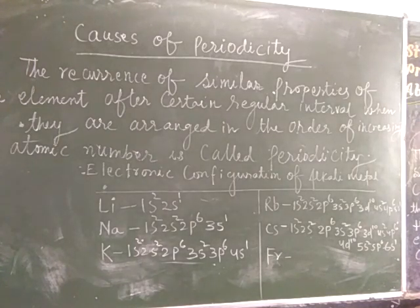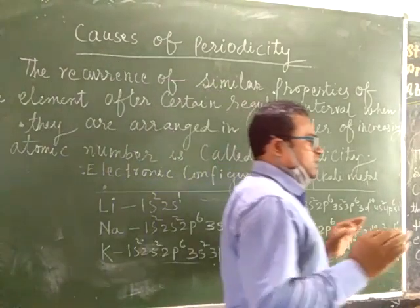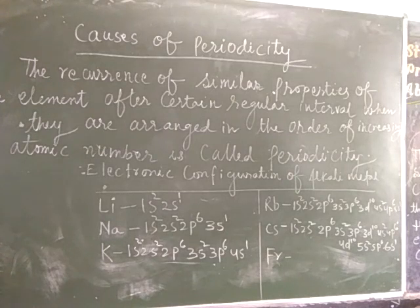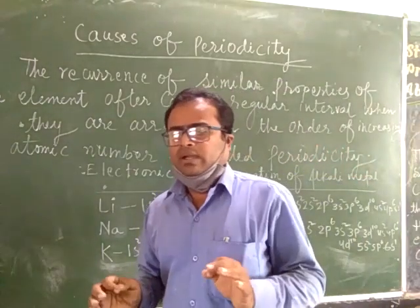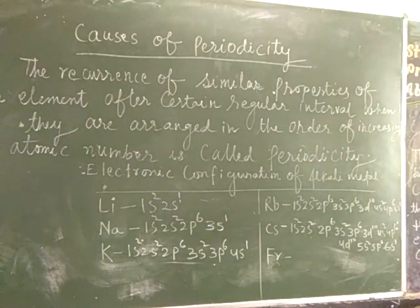You will find that the outermost electronic configuration in group 17 is ns2 and np5. If you add all the electron then you will get seven electron present in the group 17. We will describe atomic radius, ionization potential in periodicity in the next video. Thank you.